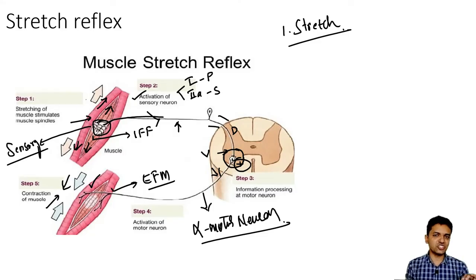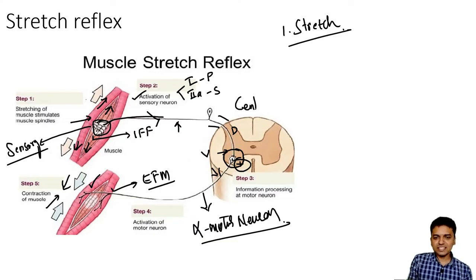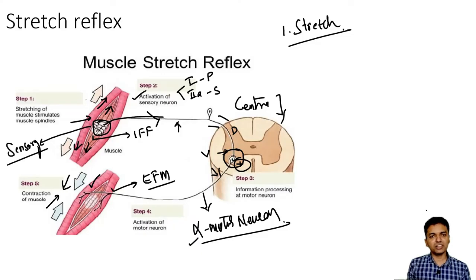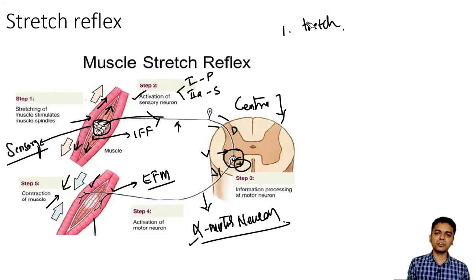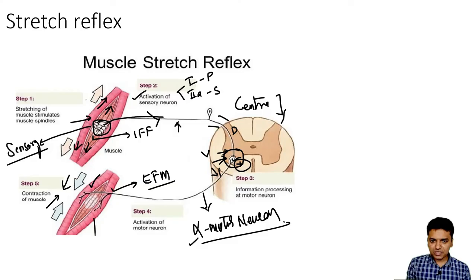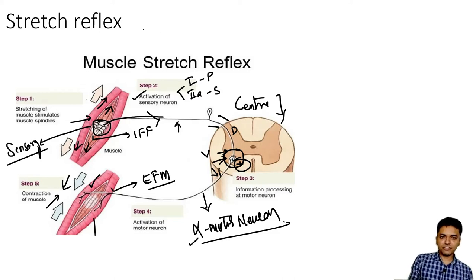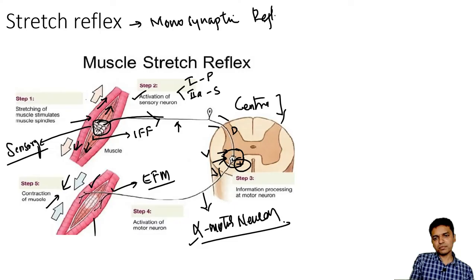The stimulus for the stretch reflex is stretch. The receptor is the muscle spindle. Afferent nerves are 1A and 2 group of neurons. The center is located at the level of the spinal cord. The efferent is the alpha motor neuron. The effector is the muscle, and the effect is contraction of the muscle. The stretch reflex is a reflex wherein there is a single synapse occurring in the spinal cord between the afferent neuron and the alpha motor neuron — that's why stretch reflex is a very good example of monosynaptic reflex.